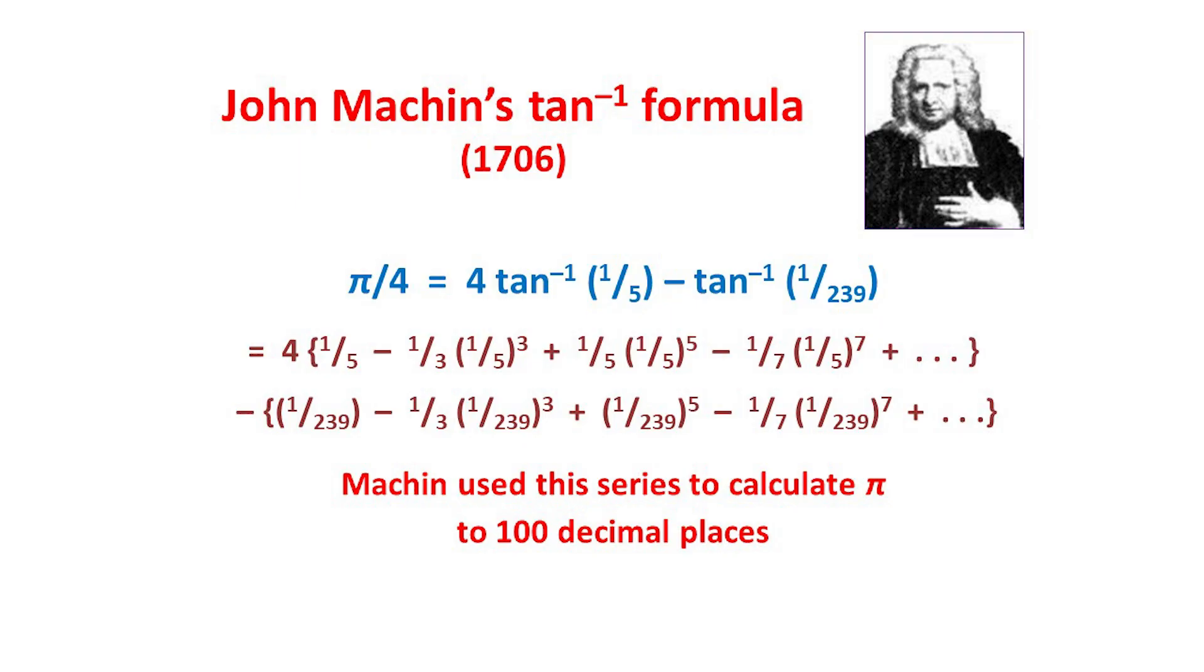For example, taking just 3 terms already gives us 2 decimal places. Also, 5 is an easy number to divide by, so that Machin was able to calculate pi by hand to 100 decimal places, a great improvement on anything that had gone before.